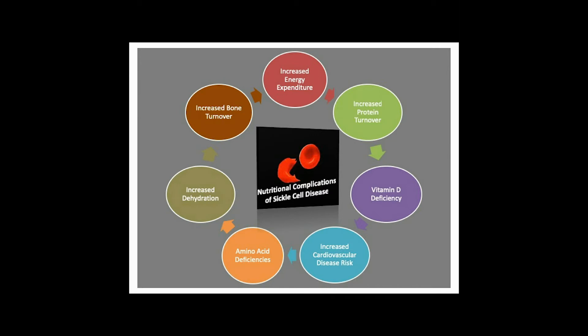Nutritional complications of sickle cell disease arise primarily due to increased protein turnover. A normal red blood cell turnover is 120 days. With sickle cell disease, this is drastically reduced to approximately 10 days. This results in an increased energy expenditure demand.